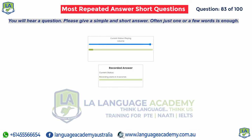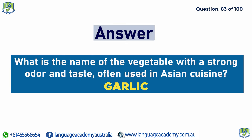What is the name of the vegetable with a strong odor and taste, often used in Asian cuisine? Garlic.